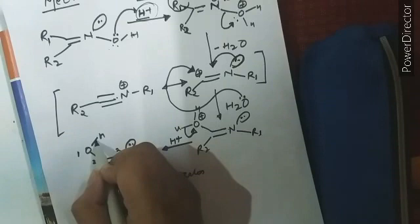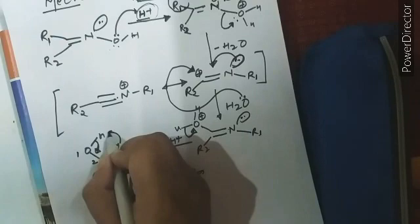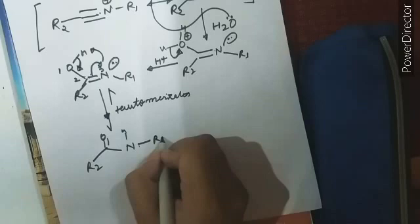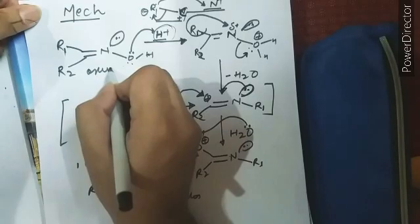Tautomerization. See, it's very simple. One, two, three. The hydrogen will shift the electron and this bond pair will become a lone pair and this lone pair will attack the hydrogen. R2, R2, N, H, and R1. See, this is an amide.